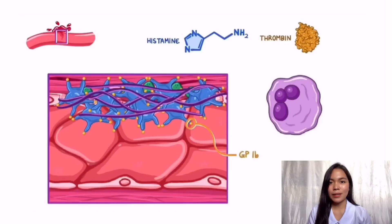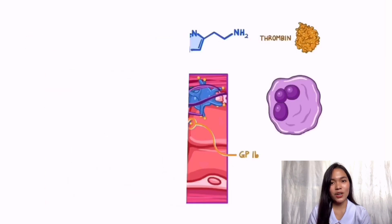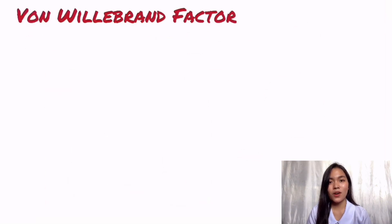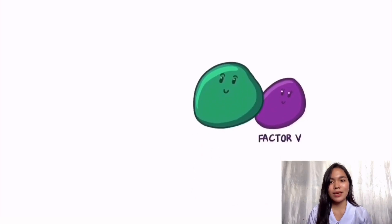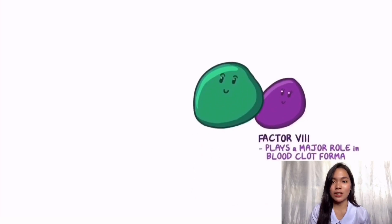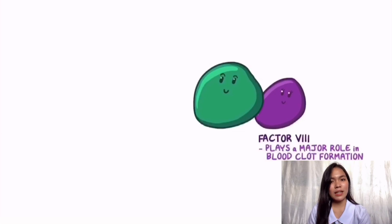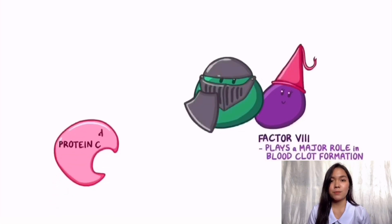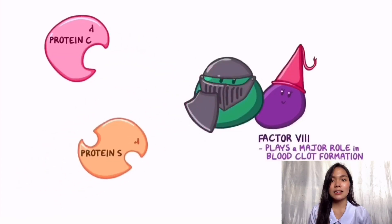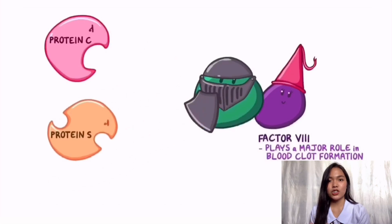In addition to binding platelets together, von Willebrand factor also binds and carries factor VIII. Factor VIII plays a major role in the blood clot formation process, and to work well, it is supposed to be bound to the von Willebrand factor, because in this case it is protected from early degradation by protein C and protein S, which would otherwise remove it from circulation before it does its job.